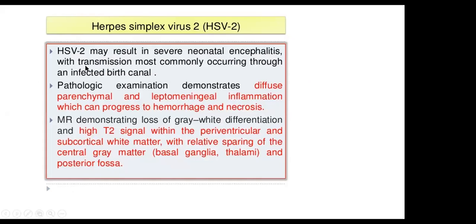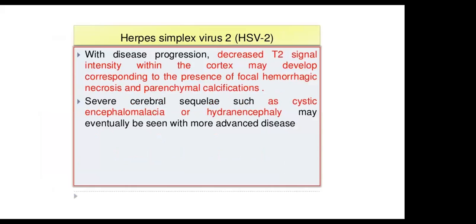Herpes simplex type 2 may result in severe neonatal encephalitis, with transmission most commonly occurring through the infected birth canal. Pathologic examination demonstrates diffuse parenchymal and leptomeningeal inflammation, which can progress to hemorrhage and necrosis. MRI demonstrates loss of gray-white matter differentiation and high T2 signal in the periventricular and subcortical white matter, with relative sparing of the central gray matter, basal ganglia, and posterior fossa. With disease progression, decreased T2 signal may develop corresponding to hemorrhage, necrosis, or parenchymal calcification. Severe cases may show cystic encephalomalacia or hydranencephaly.